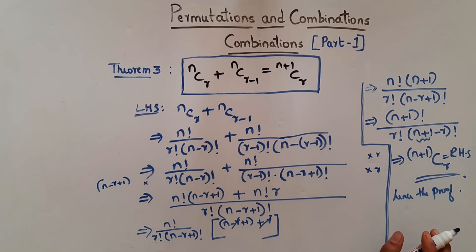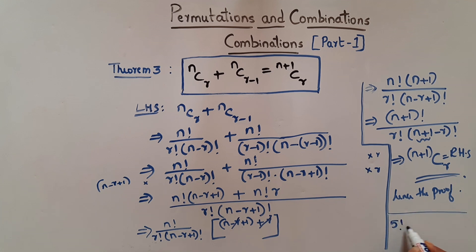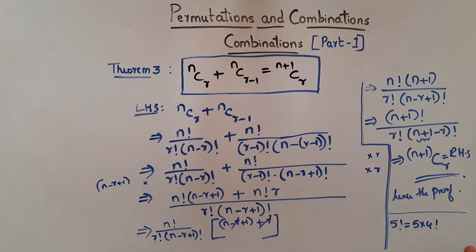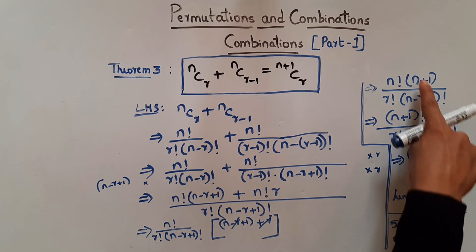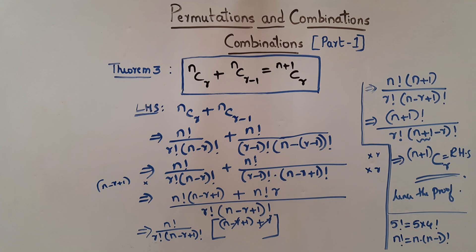One more point to remember: when simplifying factorials, for example 5! = 5 × 4!, we subtract 1 and write that as a factorial — so n! = n × (n−1)!. This is the trick applied throughout the proof. That's it for this video; we'll continue in the next part. See you soon — take care, Almighty bless!